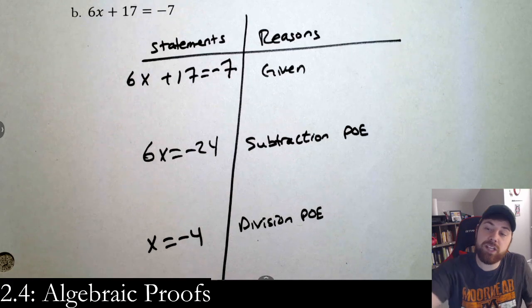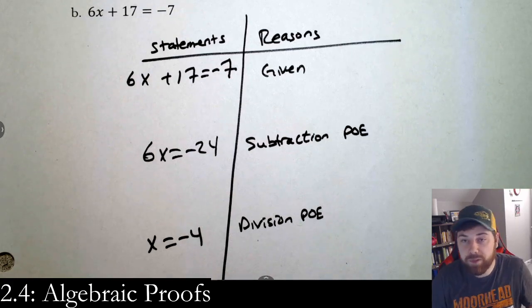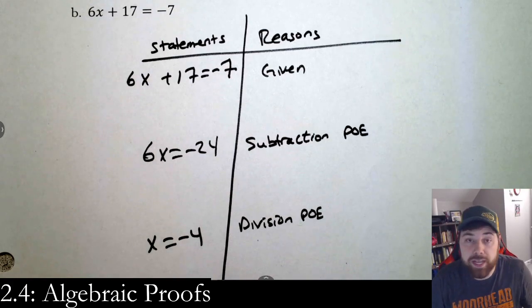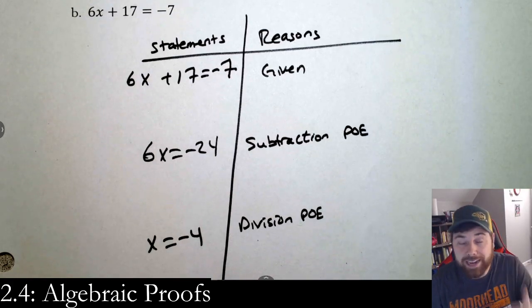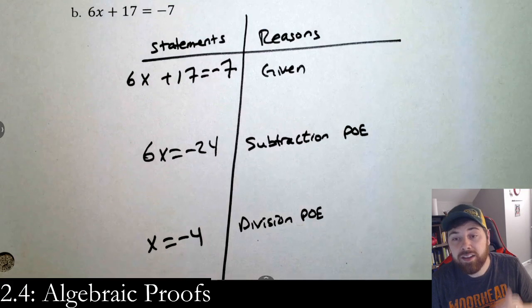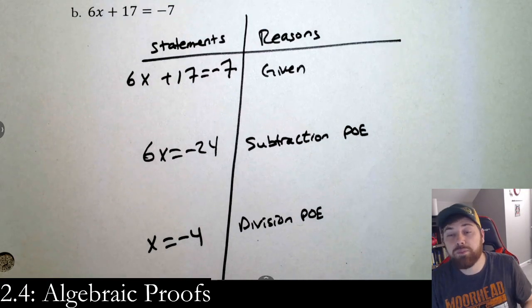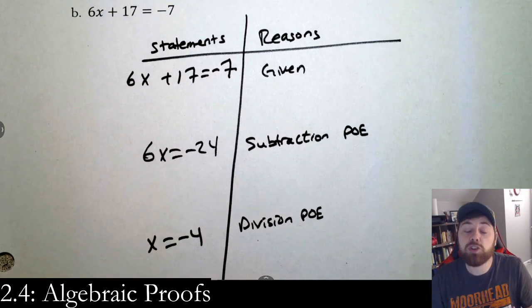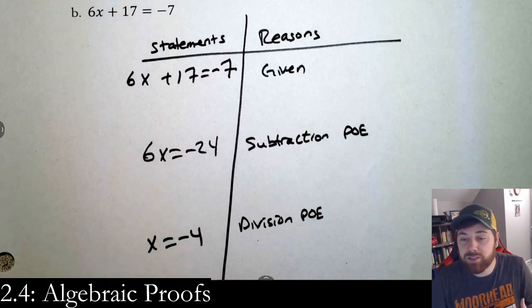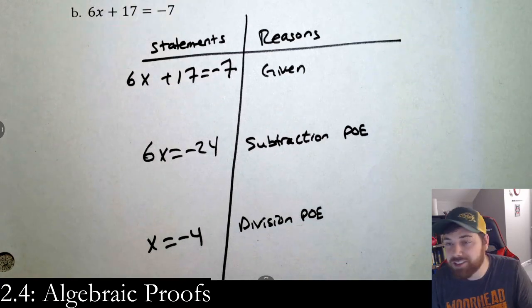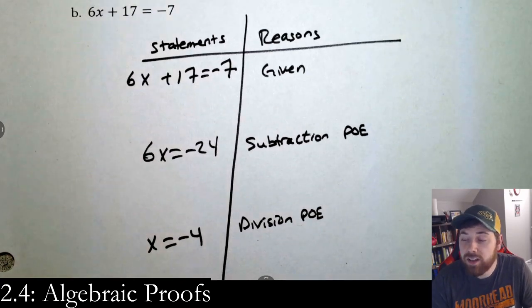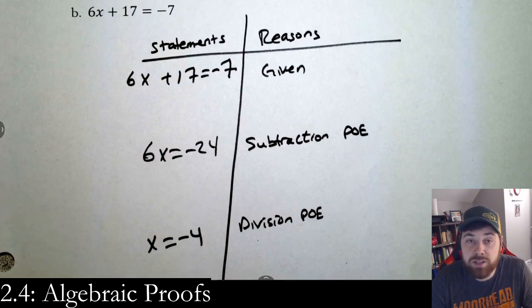From the second to third step, we divided by 6 on both sides — that's the division property of equality. These shouldn't be too bad. The left side (statements) is easy to generate since you can solve equations; the right side (reasons) is just identifying what you did to get from one step to the next. Go practice, do the homework — this is usually the hardest section but you'll do great. Let me know if you have questions.